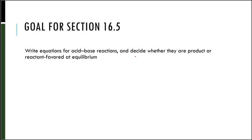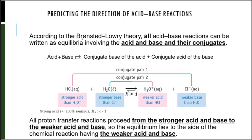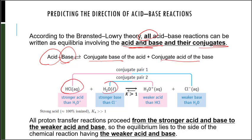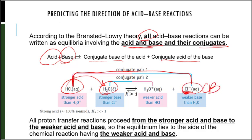In this next section, we're going to write equations for acid-base reactions and decide whether they're product or reactant favored at equilibrium. According to Bronsted-Lowry, all acid-base reactions can be written as equilibria involving the acid and base and their conjugates. Looking at HCl in water: the strong acid donates its hydrogen, leaving Cl⁻ as the conjugate base. Water acts as the base, and H3O⁺ is the conjugate acid.